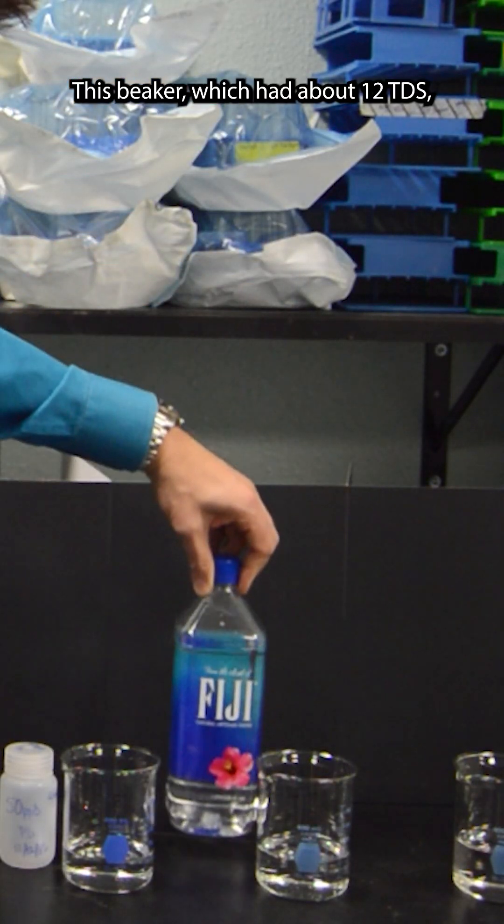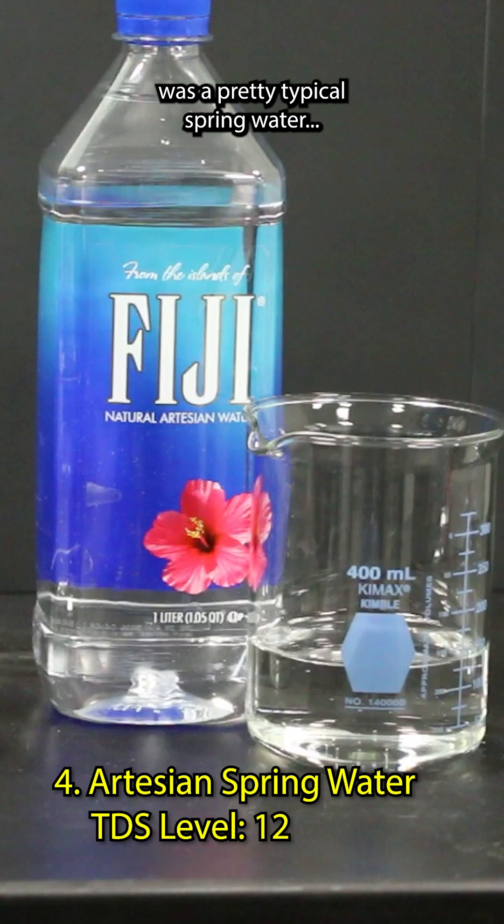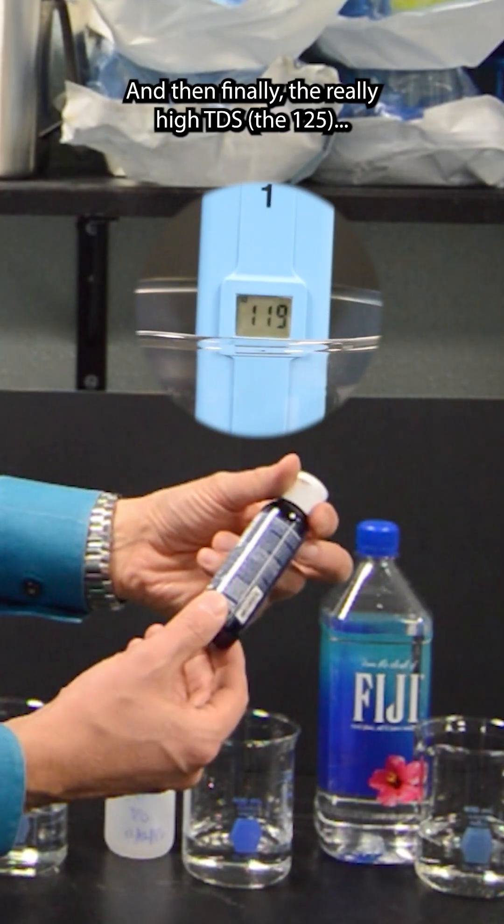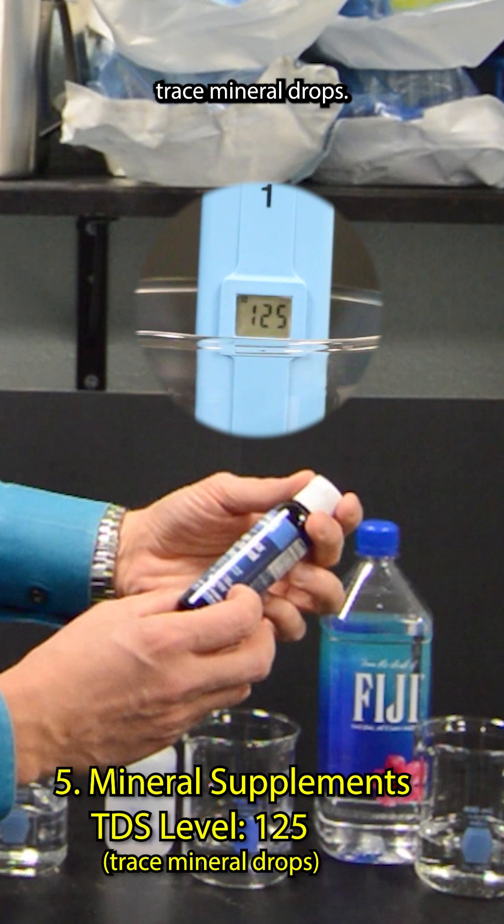This beaker, which had about 12 TDS, was a pretty typical spring water, artesian water. Finally, the really high TDS, the 125 trace mineral drops.